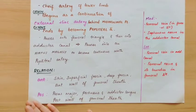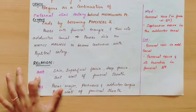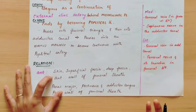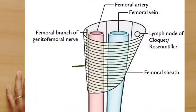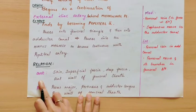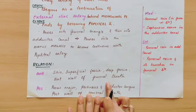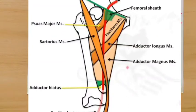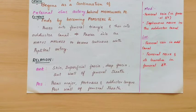Coming to the relations of the femoral artery. On the anterior side: skin, superficial fascia, deep fascia, and the anterior wall of the femoral sheath. On the posterior side: the posterior wall of the femoral sheath. So anteriorly, it is covered by the anterior wall, and posteriorly by the posterior wall of the femoral sheath.